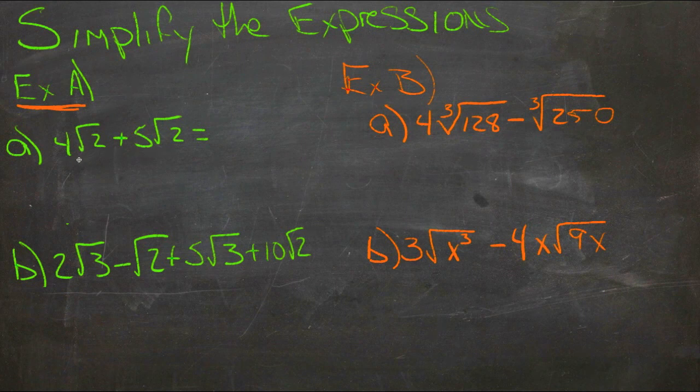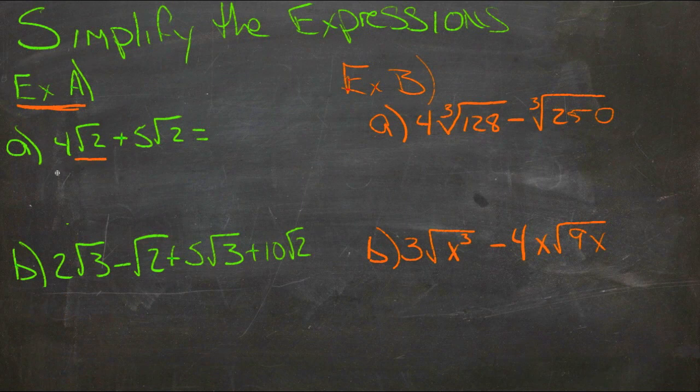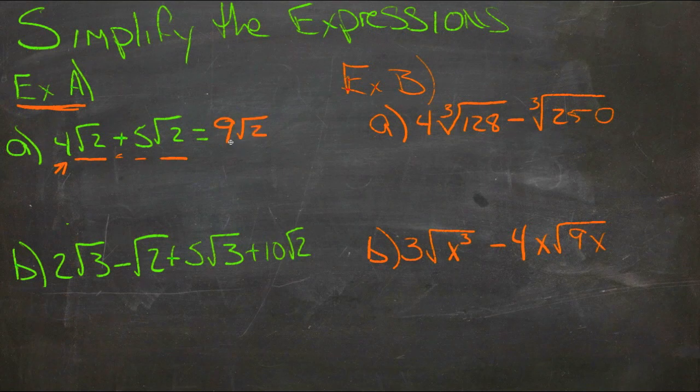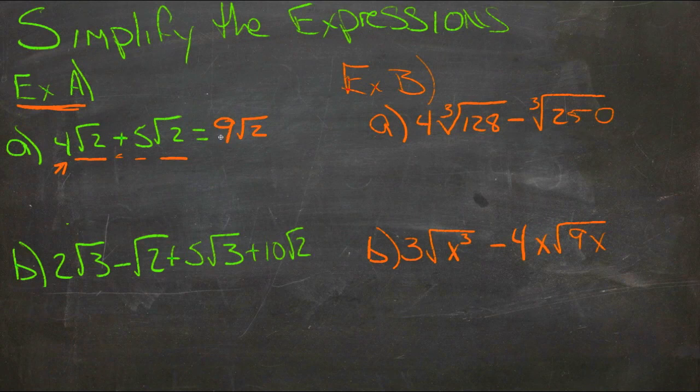So the like terms are roots of 2. Here we have 4 roots of 2, and we're adding 5 roots of 2, so we have 9 roots of 2. It's pretty straightforward as long as you think of it as just combining like terms.